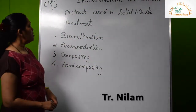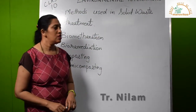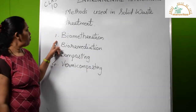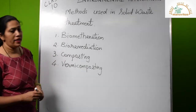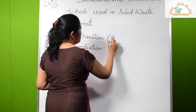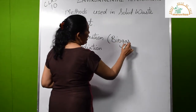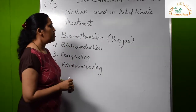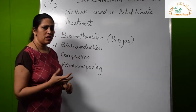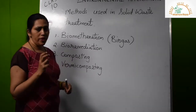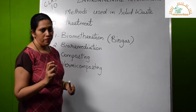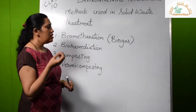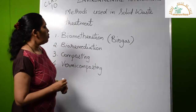Good morning students. Let us study some methods used in solid waste management or treatment. The first one is biomethanation, or formation of biogas or gobar gas. Kitchen waste or agricultural waste, mostly cow dung which contains anaerobic bacteria, is taken. Sometimes kitchen waste like fish bones can also be taken, and it is mixed with adequate quantity of water. There should be no air contact with this mixture, and it should be thin so that the anaerobic bacteria can move freely.